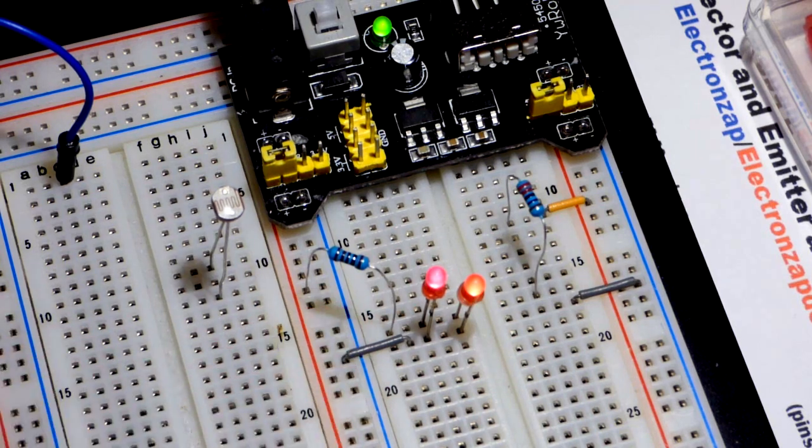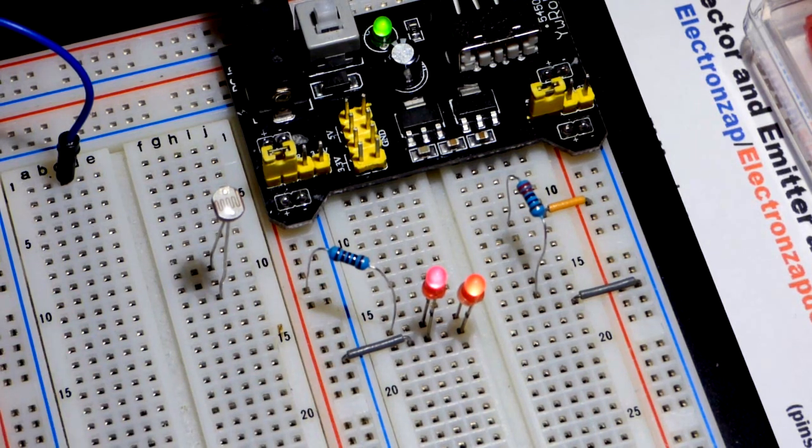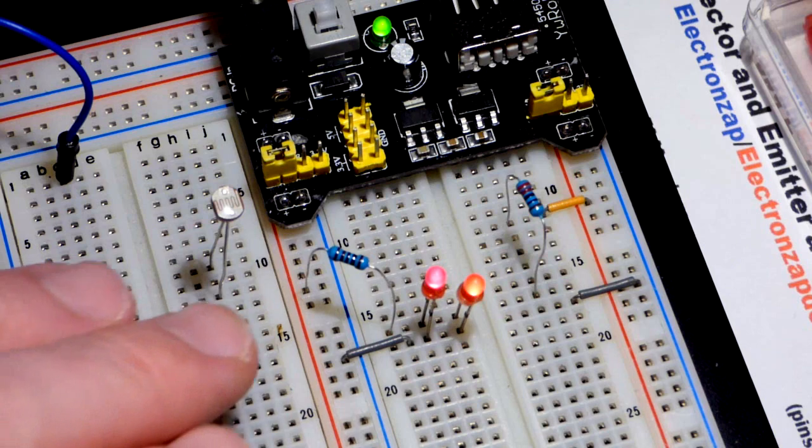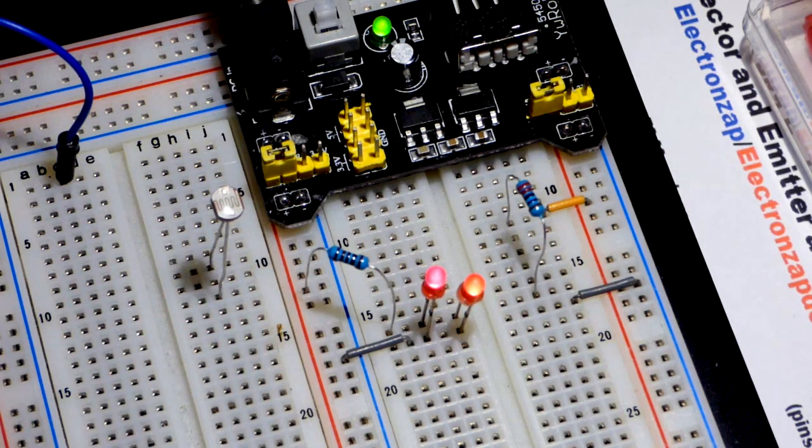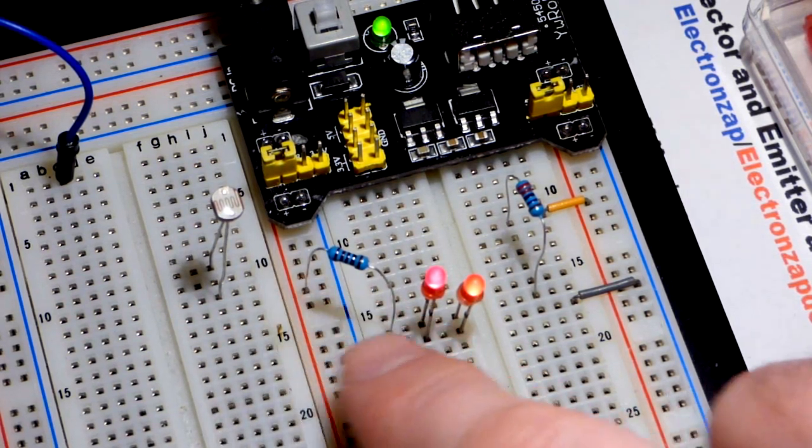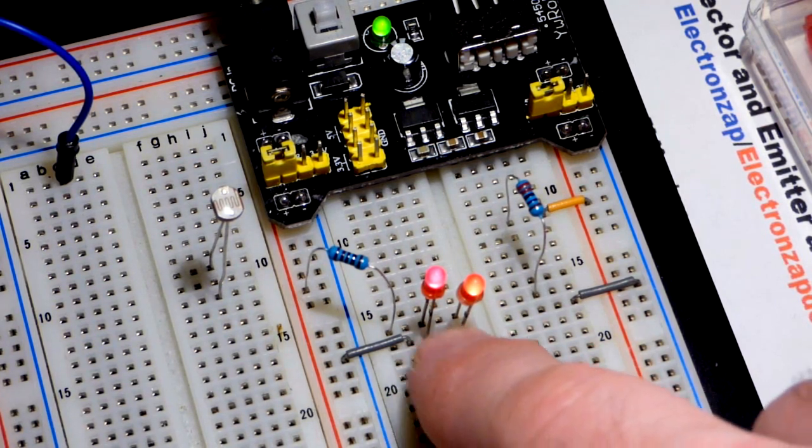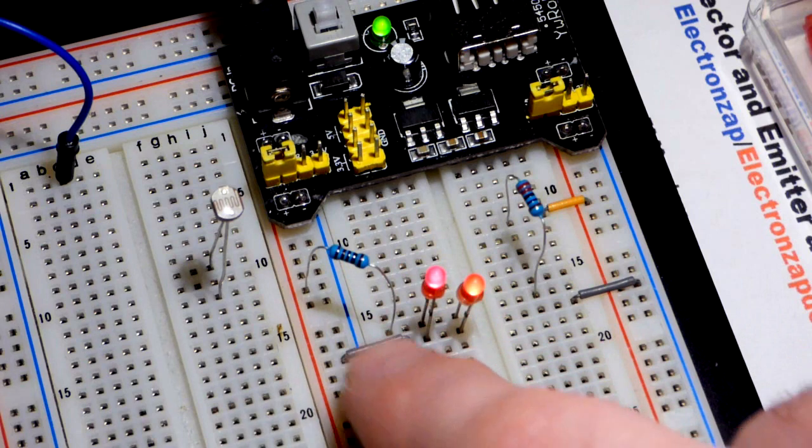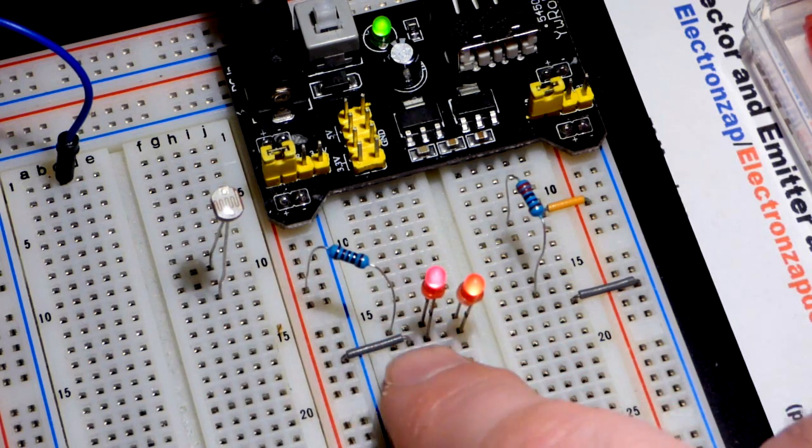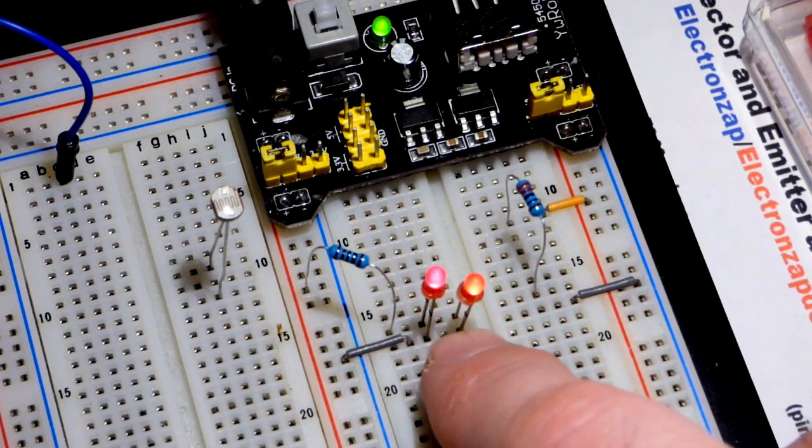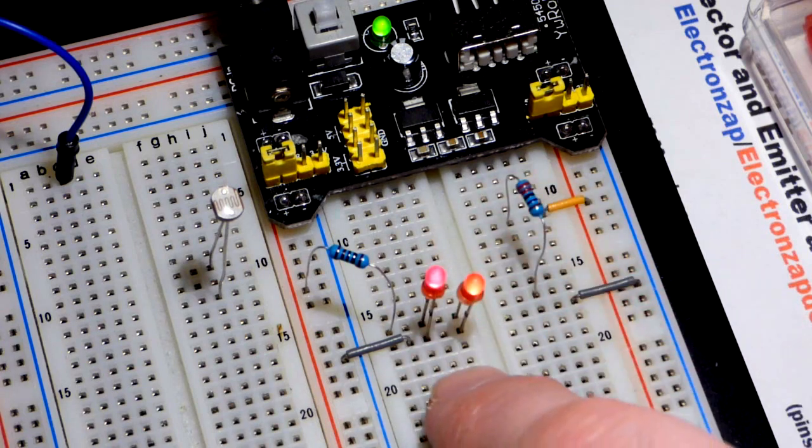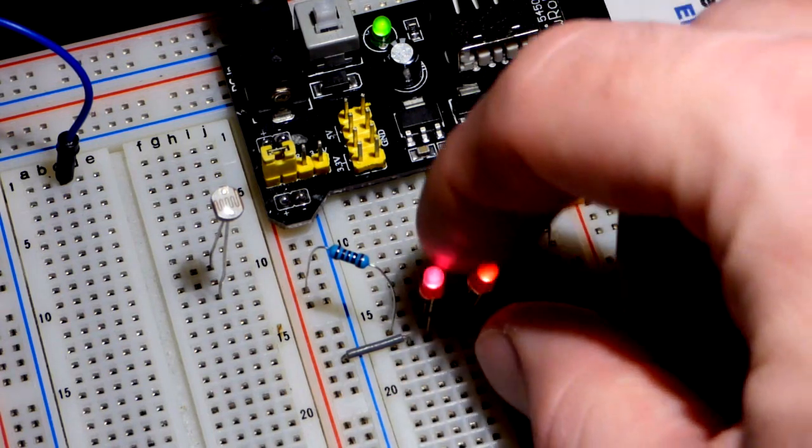Resistors limit current in a circuit. That's their main job, and that current may also set voltages somewhere, but ultimately they limit current based on the voltage across them. So these two LEDs are in parallel. They're passing about the same amount of current because that current is being set by the resistor, and they're passing current independently. Half the current is going through one, half the other. They look to be about the same brightness.